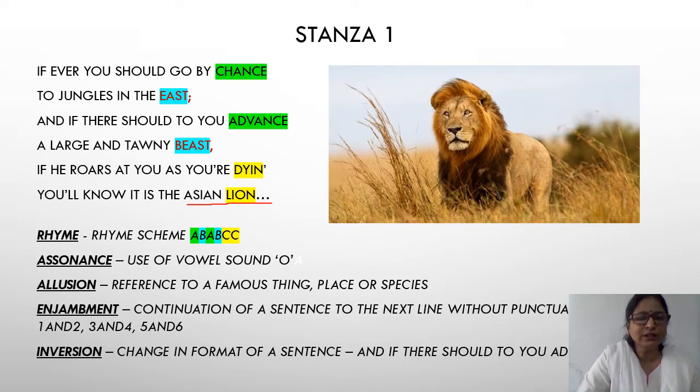Have you understood, children? So in the first stanza we have used rhyme, assonance, allusion, enjambment, and inversion. Some of these poetic devices will be repeated in the next stanzas as well, so I will not be explaining them to you in detail — you have to follow it.